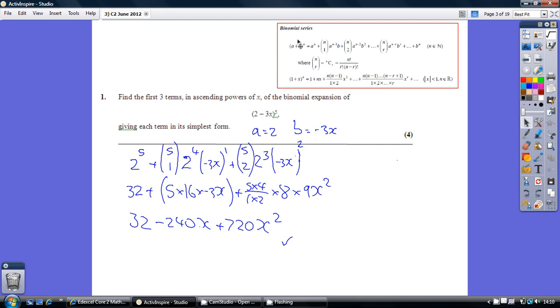So A is our first term, well our first term is 2, B is our second term, and our second term is minus 3x, and N is 5.